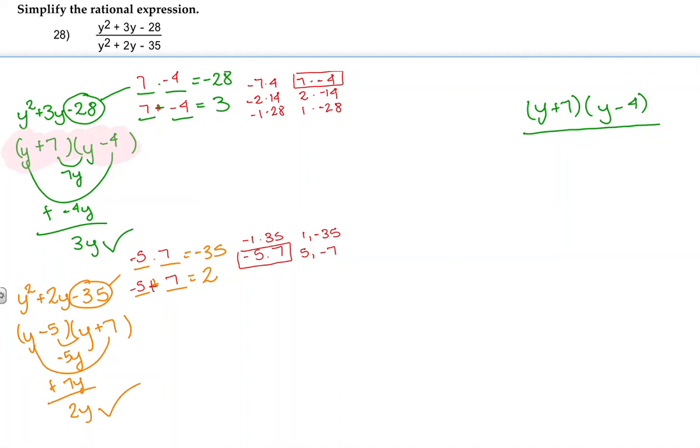So the factored form of my denominator is y minus 5 and y plus 7.